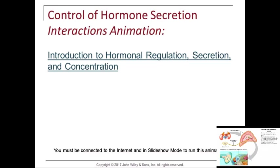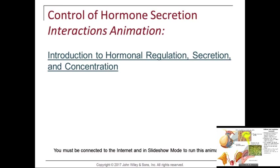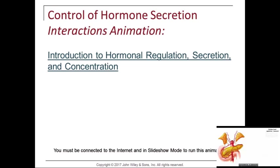When a nerve impulse reaches the end of the nerve cell process, neurotransmitters are released. These neurotransmitters serve as signal molecules to activate the endocrine cell. Hormones secreted from one endocrine cell can regulate the activity of another endocrine cell. Hormones that target endocrine cells are called tropic hormones. For example, ACTH — adrenocorticotrophic hormone — is secreted from the anterior pituitary and travels in the blood toward the adrenal cortex.